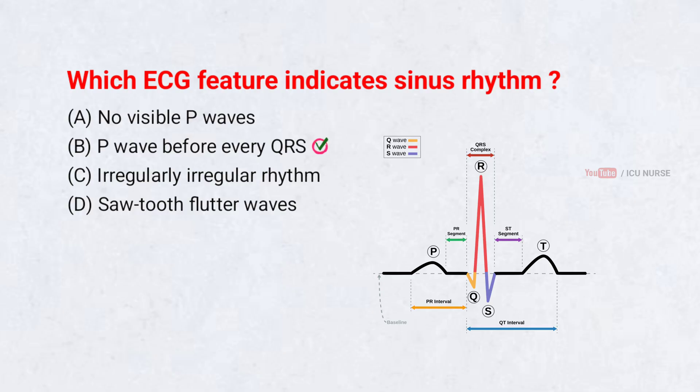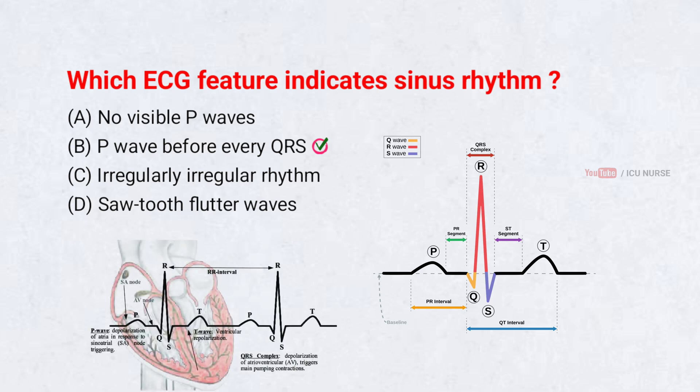In sinus rhythm, each heartbeat begins at the SA node, producing a P-wave followed by a QRS complex. This consistent pattern confirms normal electrical pacing of the heart.